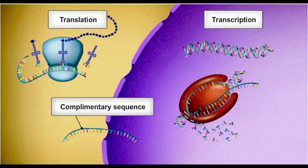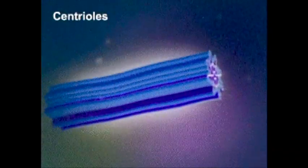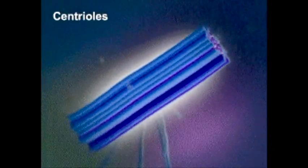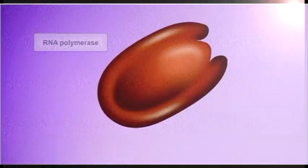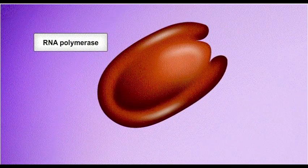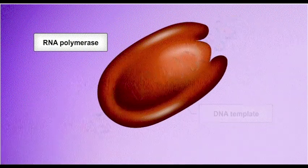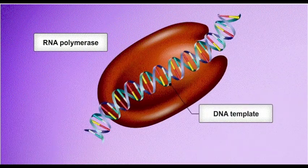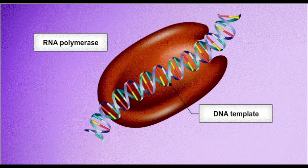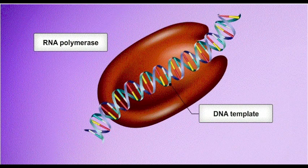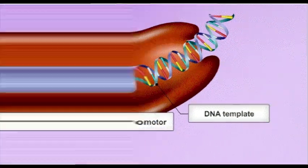Transcription occurs in the nucleolus. Spindle fibers form during cell division to guide the duplicated chromosomes. RNA polymerase binds to a DNA template at a special nucleotide sequence near the beginning of a gene called a promoter.